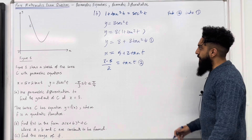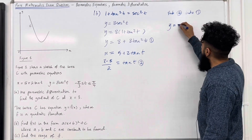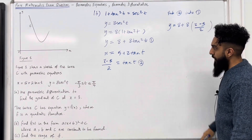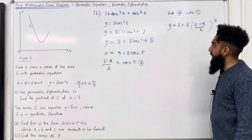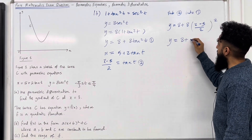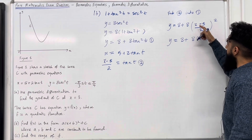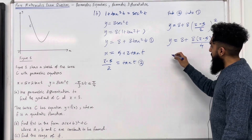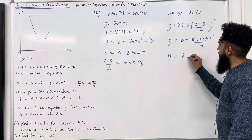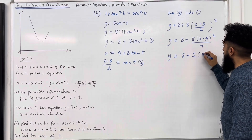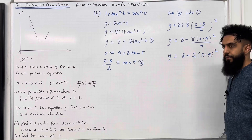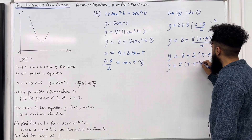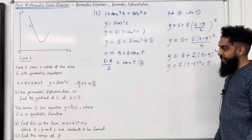Substituting tan t equals (x minus 5) over 2 into the y equation gives y equals 8 plus 8 times ((x minus 5) over 2) squared. Simplifying: the denominator 2 squared is 4, and 8 over 4 is 2. So y equals 8 plus 2(x minus 5) squared. Rewriting: y equals 2(x minus 5) squared plus 8. That is the desired form.